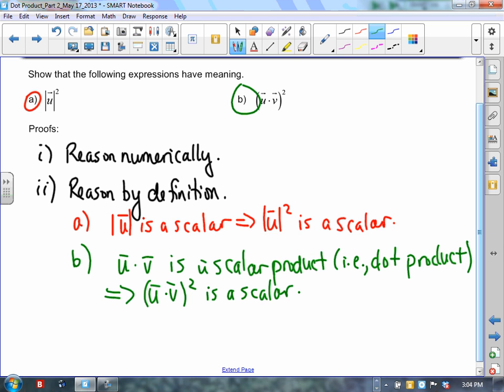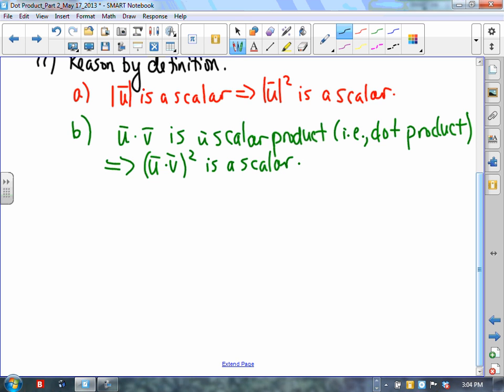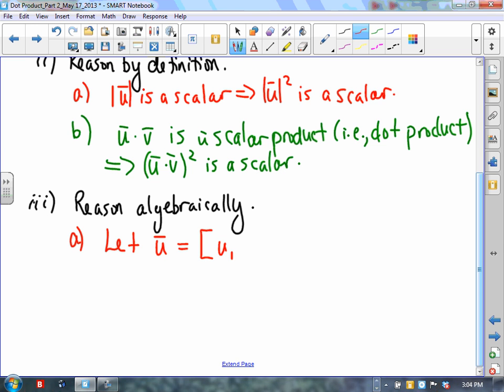Now the third way, the third means of doing this, would be for you to reason algebraically. In this case, what we'll do in part a, we'll just do the one part so that the video is not exceedingly long. In part a, we could let u, vector u, be denoted in Cartesian form by [u1, u2]. This would be very similar to us using x and y, but in terms of the coordinates or the endpoint of that position vector u, let's just say u1, u2.